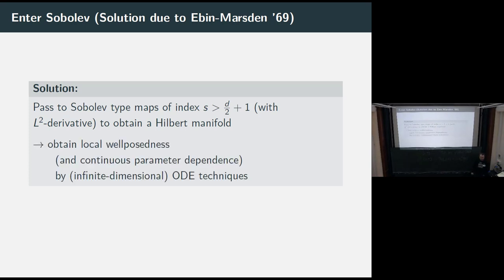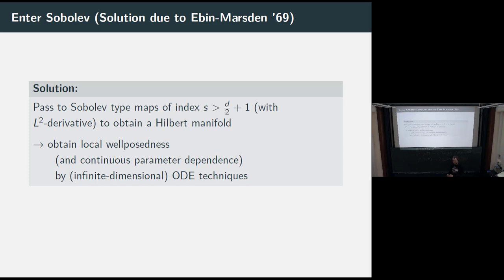What Ebin and Marsden had to prove — and this is what they did in their 1970 paper — is that the geodesic equation is given by a right-hand side which is smooth in the data. You have to prove that the geodesic spray giving the ODE is smooth. With these techniques, still in the deterministic setting, you obtain local well-posedness, continuous parameter dependence, and Sobolev topologies, by infinite-dimensional ODE techniques. This trick is great for people like me who don't understand PDEs — you can discuss away all the PDE problems because ODEs I can at least understand.